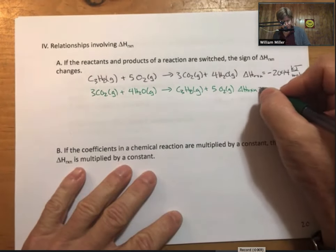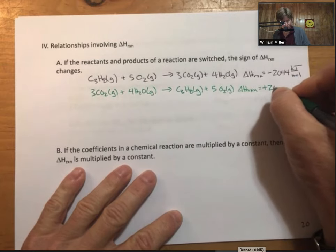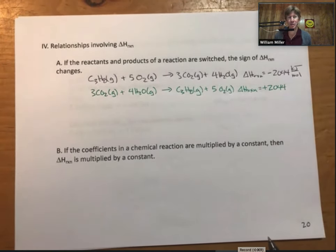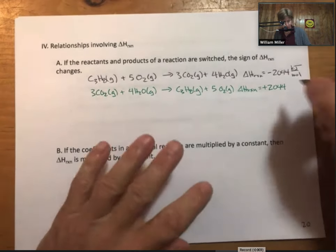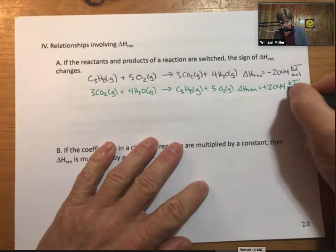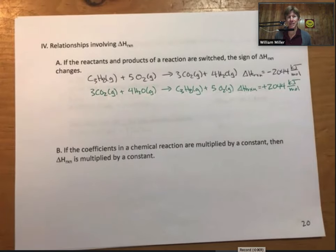And delta H reaction for this is positive 2,044 kilojoules per mole. And let's think about what that means.